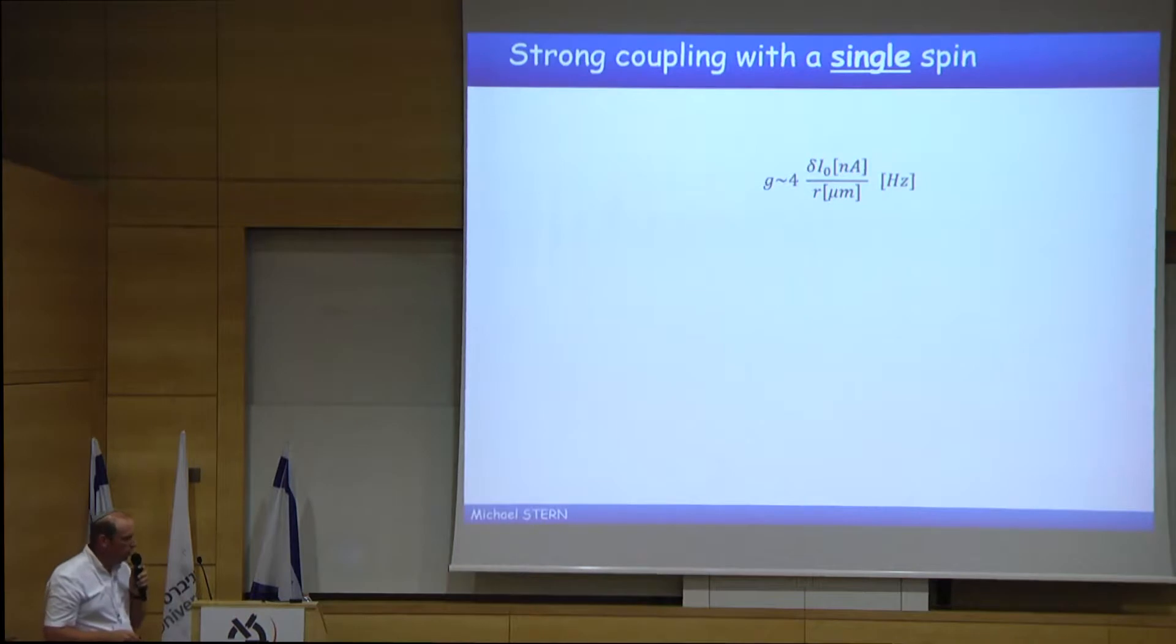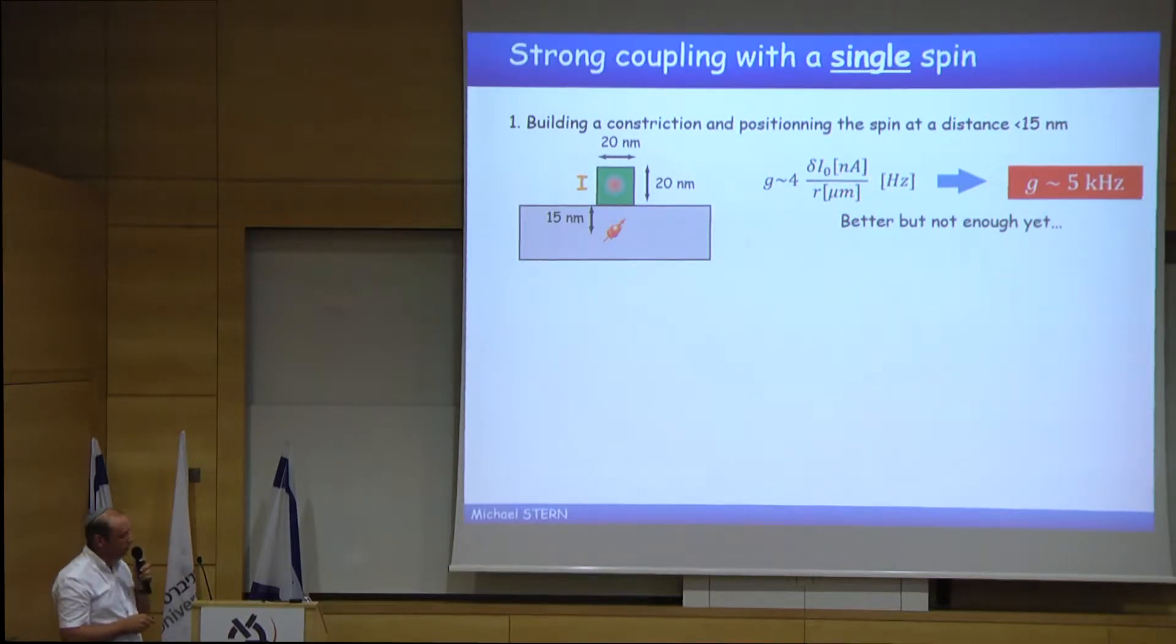Yet, it does not solve the problems that I have shown you before. If I want really to communicate information between spins, between single spins, I need really to reach the strong coupling regime with a single spin. So if we look back at the formula, there is, in fact, two parameters which I can change: the distance between the spin and the critical current, the current fluctuation in the resonator. The first thing that we can do is, rather than having a spin at a distance of four microns, is to put a spin very close from a constriction and to use state-of-the-art techniques, electron lithography techniques, in order to align it very precisely. The coupling, rather than being 20 hertz, can reach, theoretically, five kilohertz. It's good, but not yet enough.